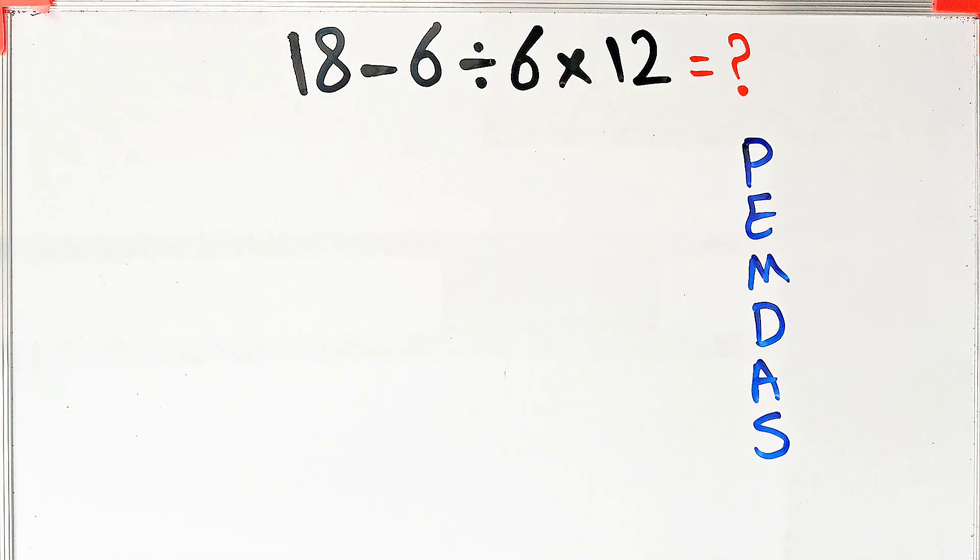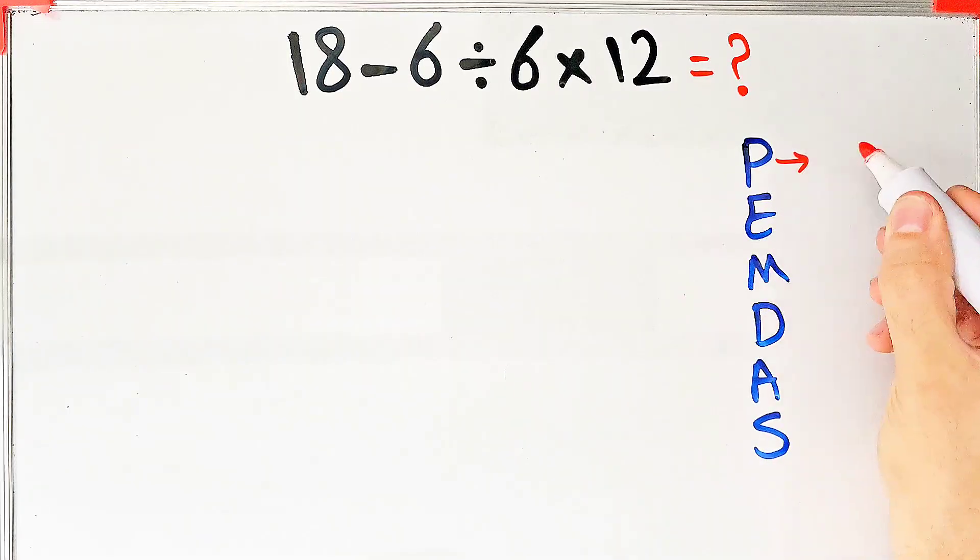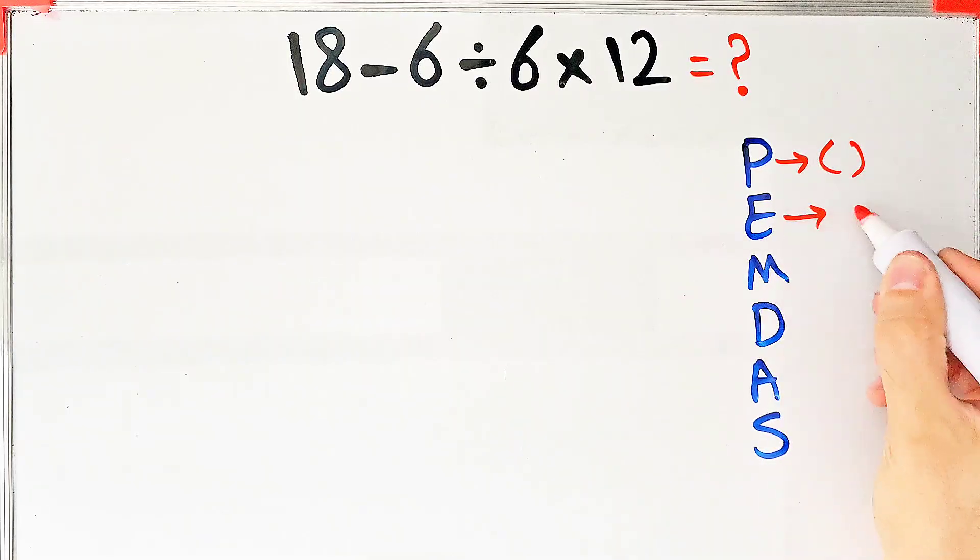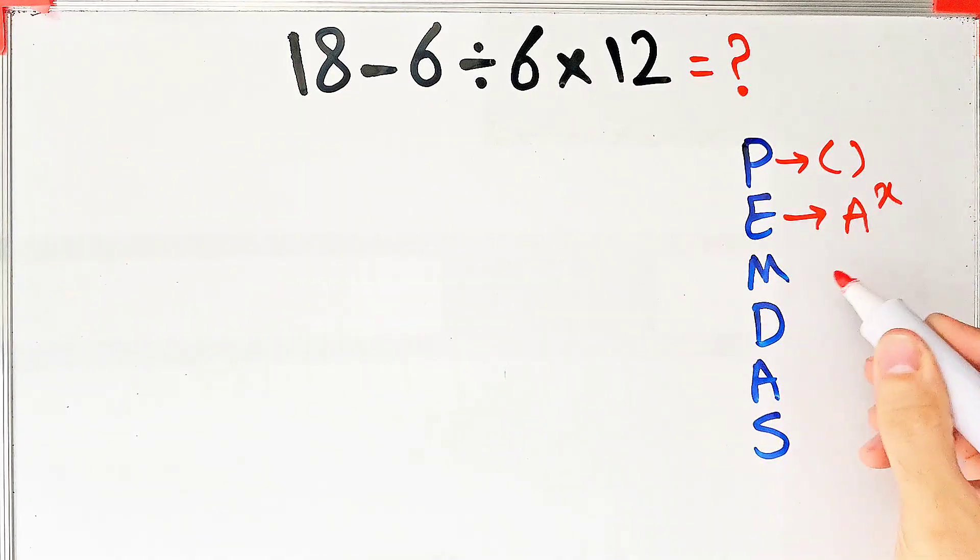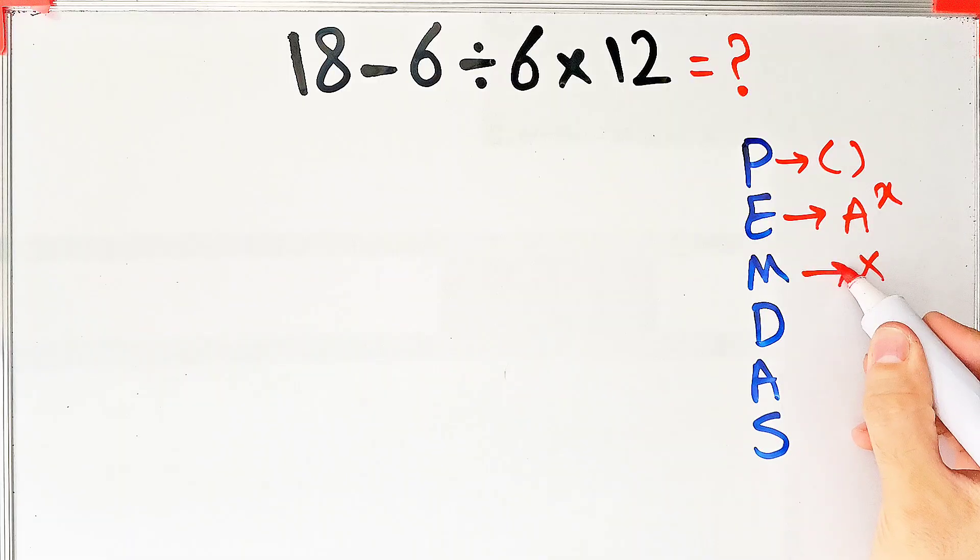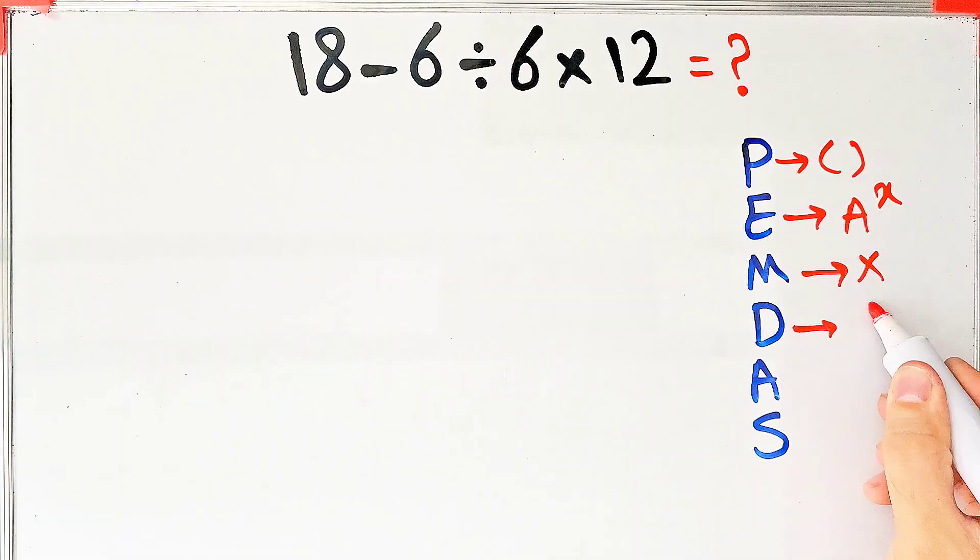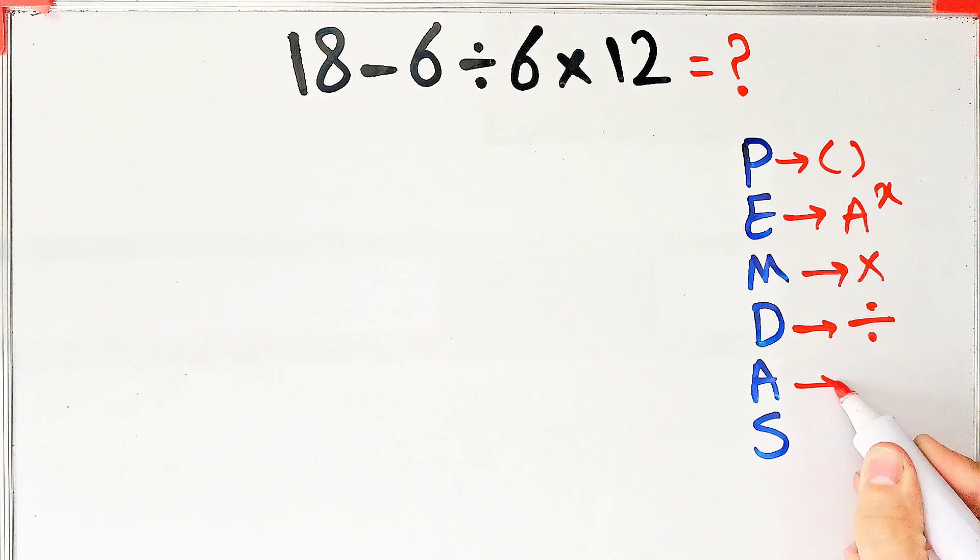In this rule, P stands for parentheses, E stands for exponents, M stands for multiplication, D stands for division, A stands for addition, and S stands for subtraction.